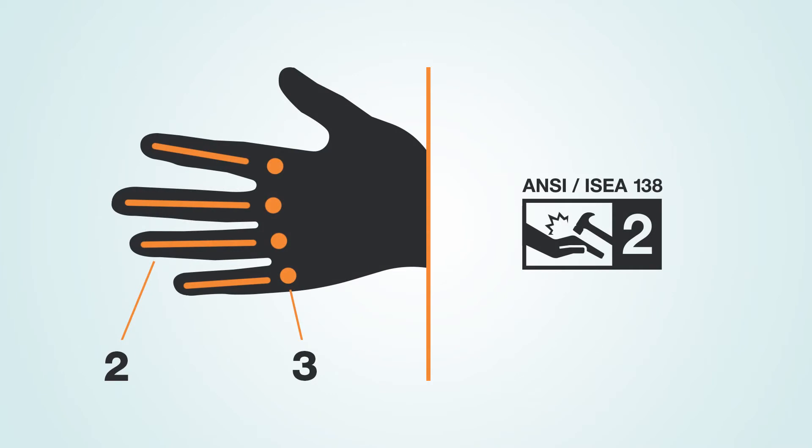Both the knuckles and fingers are tested and the overall rating of the gloves depends on the lowest of the two. For instance, if an impact glove rates a level three in protection on the knuckles but only level two on the fingers, the overall rating for the entire glove will be level two.